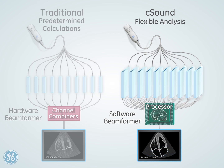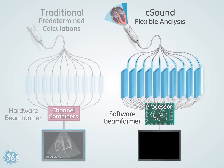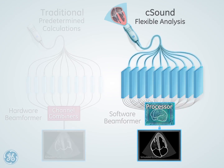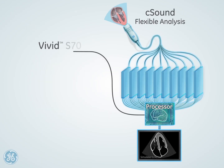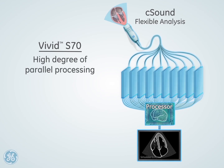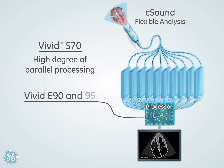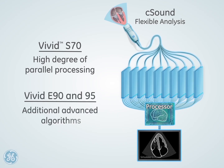In this image formation process, different types of advanced algorithms can be utilized. On our high-end Vivid S70, we use an algorithm that enables a high degree of parallel processing, resulting in high performance. On our Vivid E90 and Vivid E95, we use additional advanced algorithms.